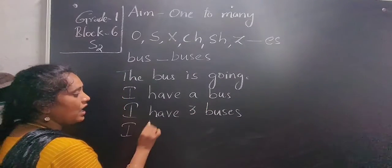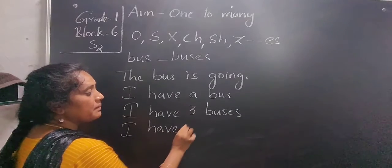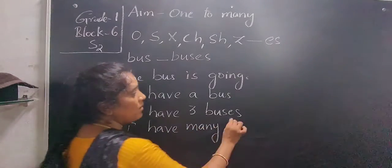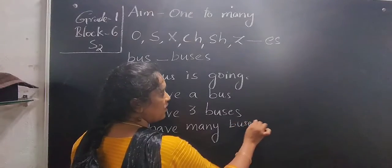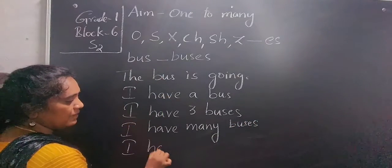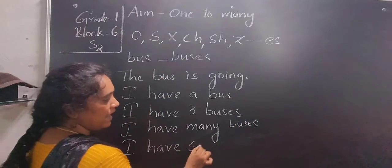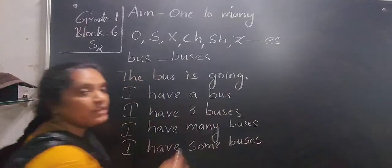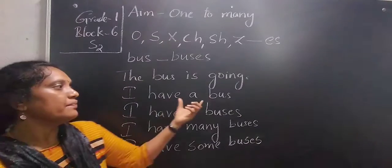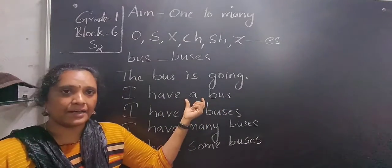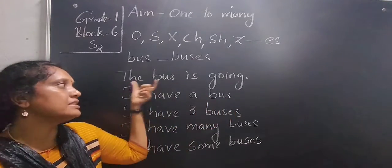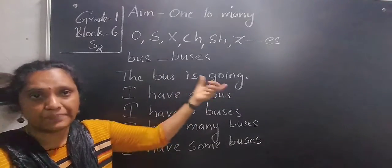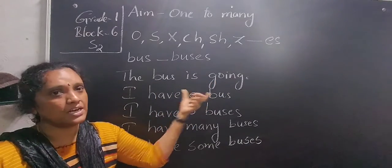Or you can say 'I have many' — many means more than one — so I can say 'I have many buses', or I can say 'I have some', 'I have some buses'. So when writing in sentence form, if singular we use 'a bus', or we can say 'the bus'. The bus is going. The car is going. The ball is playing. In this way we can use the sentence.